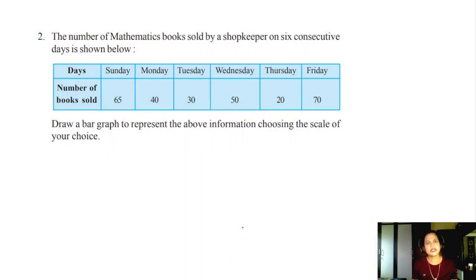Second one is number of mathematics books sold by the shopkeeper on six consecutive days is shown below. Number of days: Sunday, Monday up to Friday. Sunday to Friday is taken. Saturday is not there. Number of books sold: Sunday 65, Monday numbers are given here. Now draw the bar graph to represent the above information using the scale of your choice they are telling.